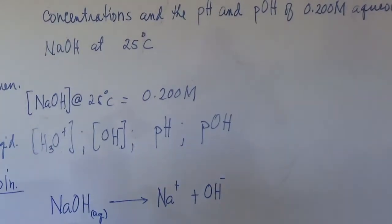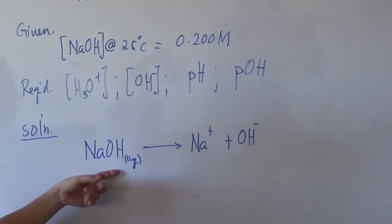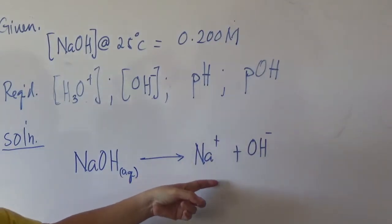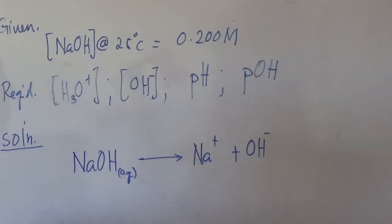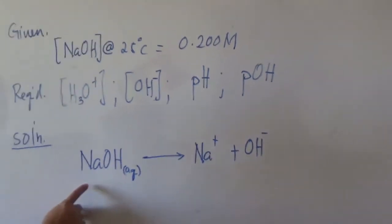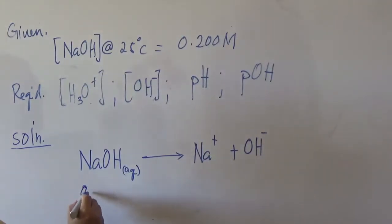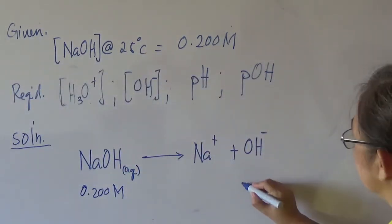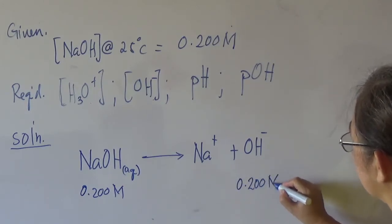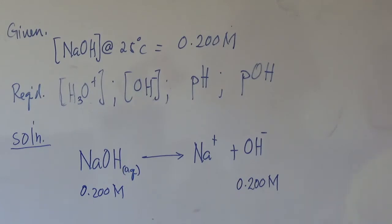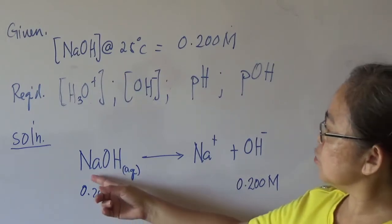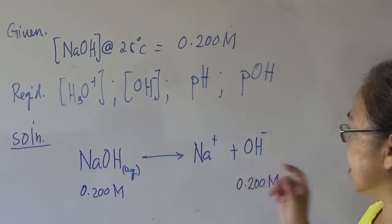Since sodium hydroxide is a strong base, it will be ionized completely into sodium ion and hydroxide ion. Whatever is the concentration of sodium hydroxide initially — 0.2 molar — once it is ionized completely, the concentration of hydroxide ion will also be 0.2 molar. At equilibrium, there will be no more sodium hydroxide; all of it is ionized into sodium ion and hydroxide ion.